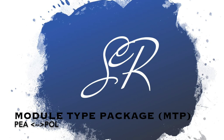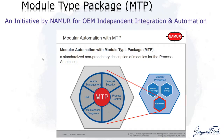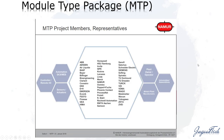Why exactly has NAMUR introduced this MTP and what benefit is it going to bring? MTP, or the Module Type Package, is an initiative to reduce the time spent during the integration between two systems — the UOP and the DCS basically. It is a non-proprietary description of the module for process automation. Automation that is compliant with MTP will make integration easy and OEM-independent.